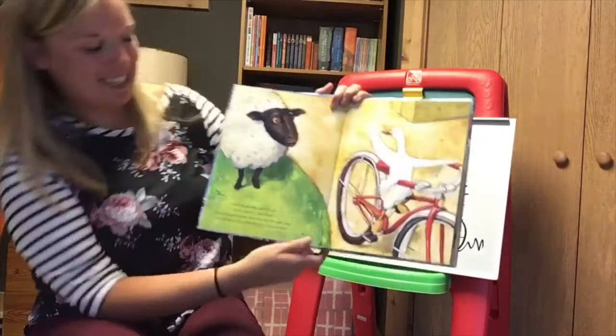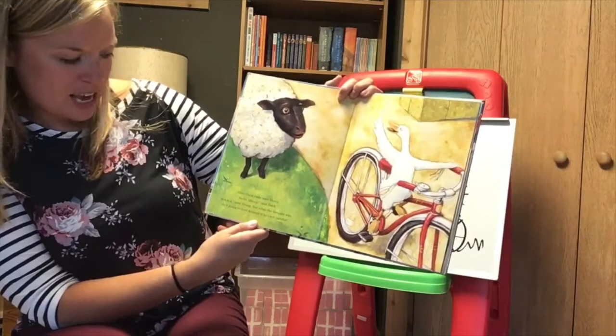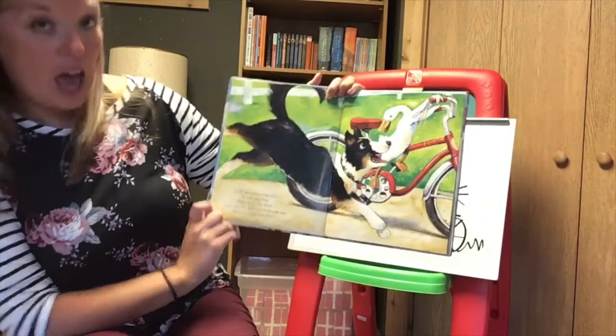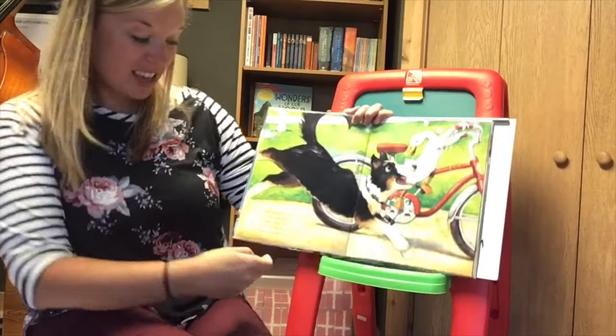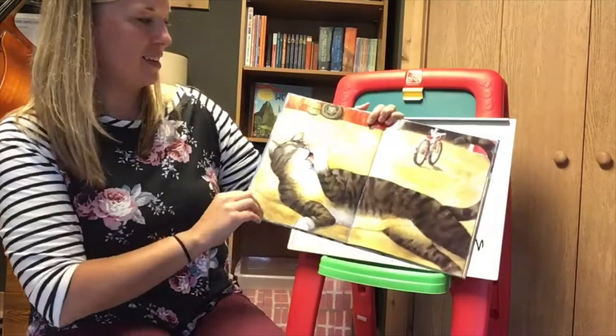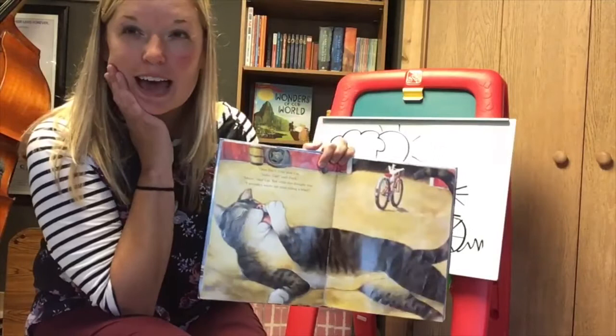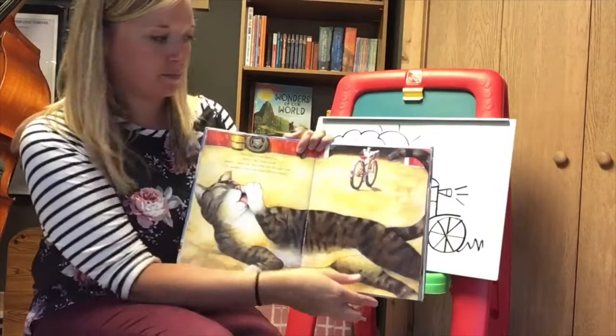Then duck rode past sheep hello sheep said duck and what did sheep say do your best sheep impression bah said sheep but what she thought was he's going to hurt himself if he's not careful duck was riding better now he rode past dog hello dog said duck and what did dog say woof woof said dog but what he thought was that is a mighty neat trick then duck rode past oh what is this cat hello cat said duck what do cats say do your best cat impression meow said cat but what she thought was i wouldn't waste my time riding a bike there he goes wonder what duck will see next